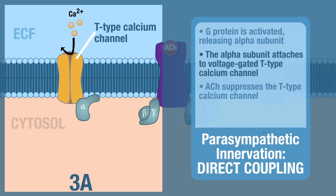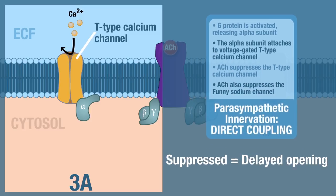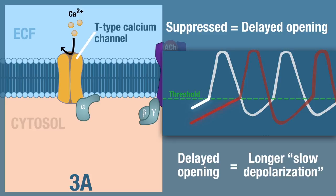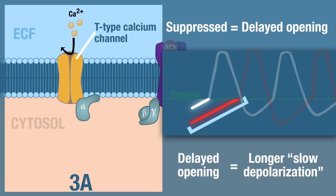Not only does acetylcholine suppress the voltage-gated T-type calcium channel, it also suppresses the funny sodium channel. When we say both of these channels are suppressed, we mean their opening is delayed. This delayed opening causes slow depolarization to take longer — a longer slow depolarization phase.